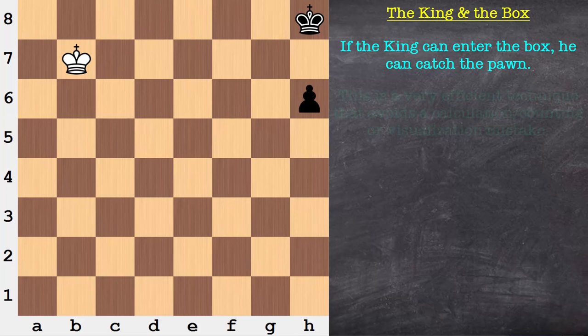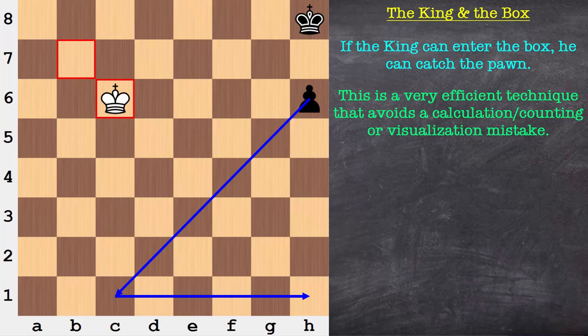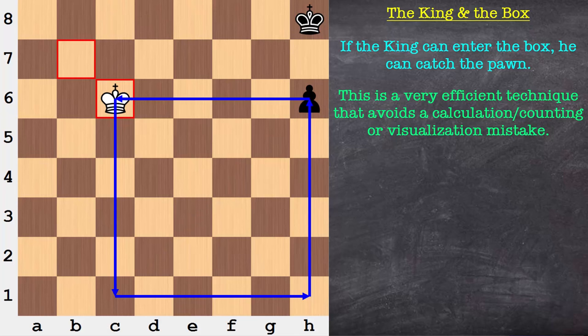So notice we're not counting, we're not visualizing both pieces moving, we're just doing a little artwork, drawing in a diagonal and the box connected with it. If the king could enter the box, he can catch the pawn. It's as simple as that.